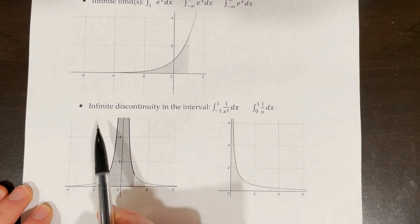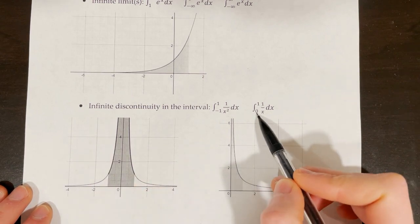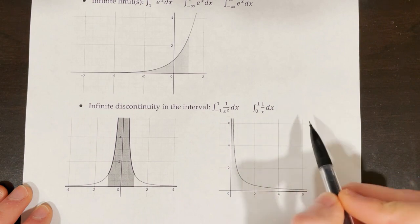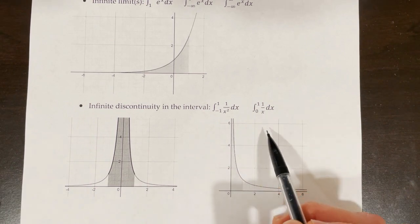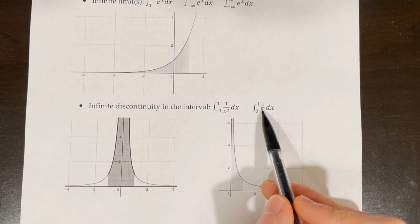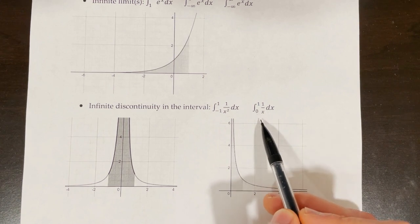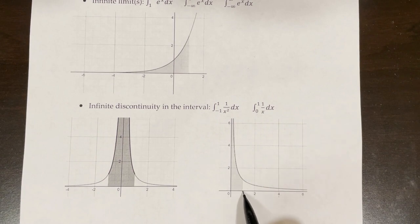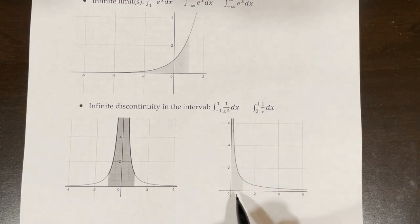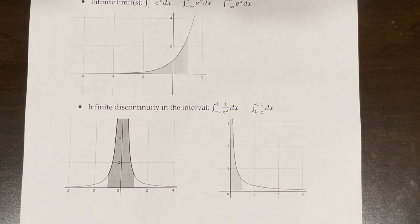Another situation where we have an infinite discontinuity in the interval would be the integral from 0 to 1 of 1 over x dx, shown in this graph. The problem here is that we have a vertical asymptote at x equals 0. So at our lower bound, that's where our problem is — we can't integrate from 0 to 1 if our graph is approaching infinity when we get to x equals 0. These are two examples of having an infinite discontinuity in the interval.